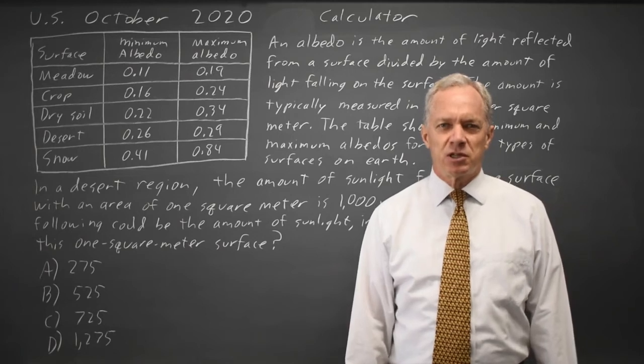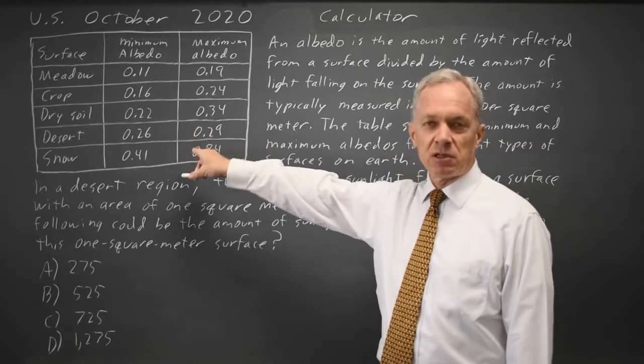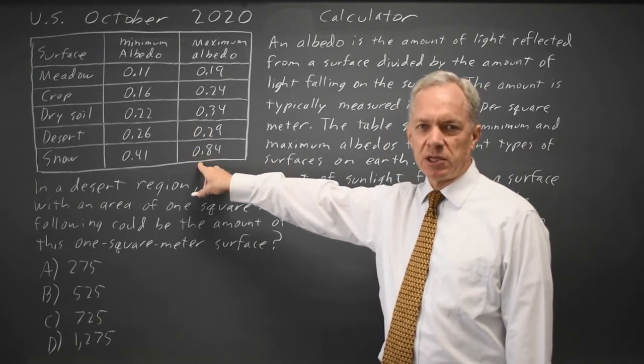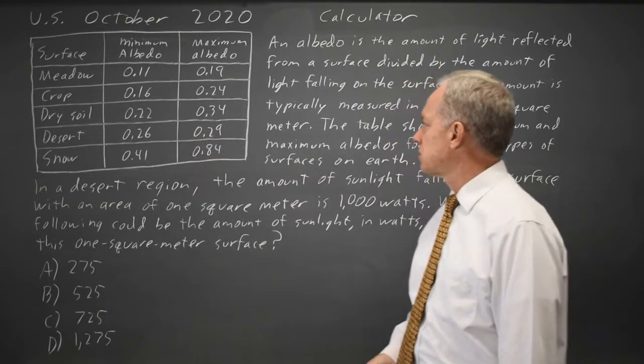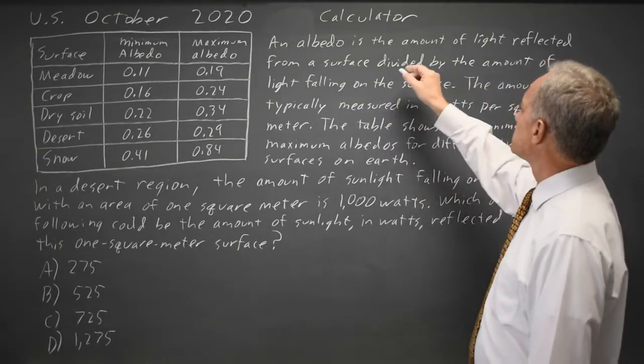This question is from the October 2020 U.S. exam calculator section. College Board gives us a table of ranges for the albedo for surfaces on Earth, and they define albedo. We need to know that definition in this case.